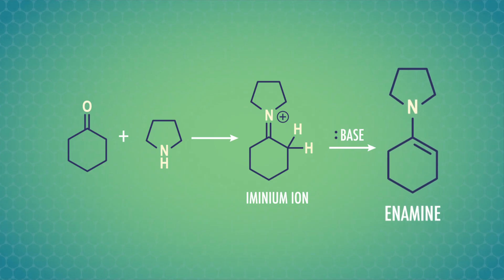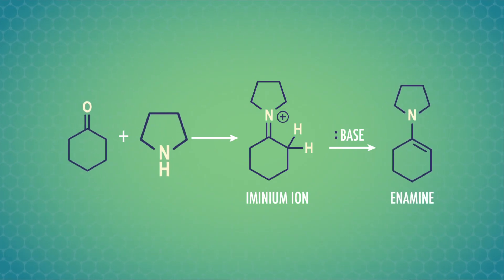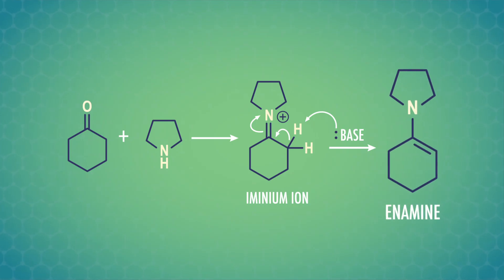However, if we're making an enamine and start with a carbonyl group, a secondary amine, and acidic conditions, we can't do this final deprotonation step. The nitrogen has two R groups instead of a hydrogen we can just kick out. So, instead, the final step of the mechanism is deprotonating the carbon adjacent to our aminium ion, giving us an enamine.